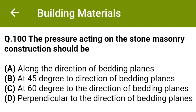The pressure acting on the stone masonry construction should be: option A, along the direction of bedding planes; option B, at 45 degrees to direction of bedding planes; option C, at 60 degrees to the direction of bedding planes; option D, perpendicular to the direction of bedding planes. The correct answer is option D, perpendicular to the direction of bedding planes.